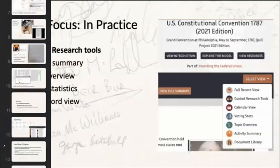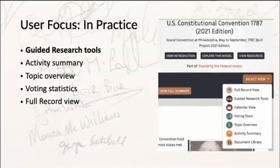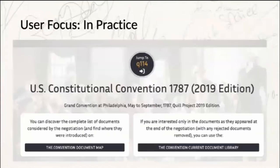Quill has a number of tools and pages that we don't necessarily use as editors, but it's important to be aware of them because the work we do on the timeline directly informs them — they're the tools that very much have an end user in mind. If you go to 'Select View' from this project on the project home page and then click 'Guided Research Tools,' we'll have a look at that together.